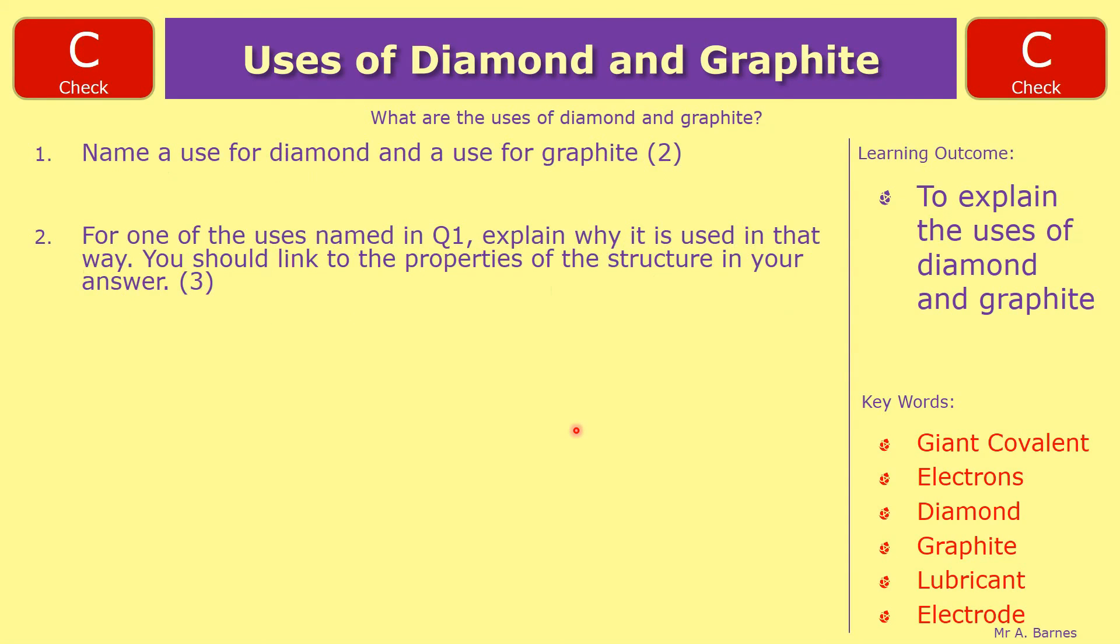Let's have a look at the answers then. So if we start off with question one, it says name a use for diamond and a use for graphite. Starting off with diamond then, you've got your cutting tools. And there are two you could have put for graphite, which are either your lubricant or your electrode.